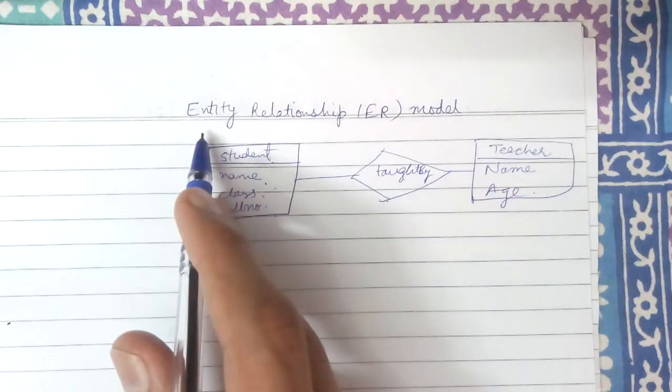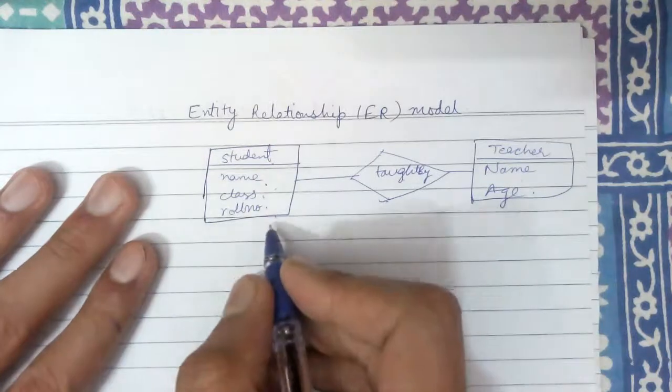So in entity relationship model, we have associations between several different entities.